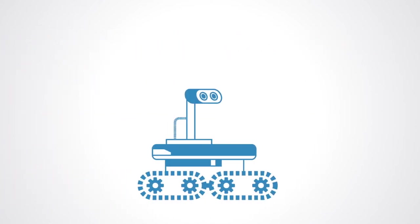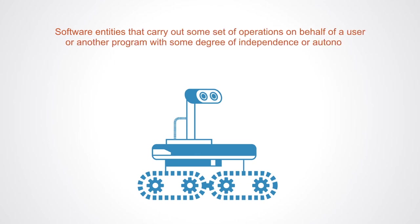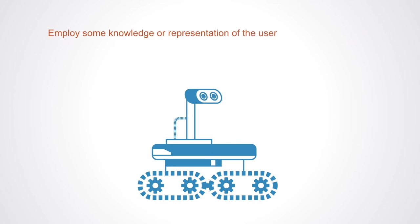Smart systems are software entities that carry out some set of operations on behalf of the user or another program with some degree of independence or autonomy, and in so doing employ some knowledge or representation of the user's goals or desires, and the environment within which they act, in order to achieve those goals.